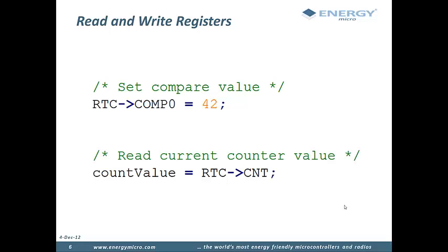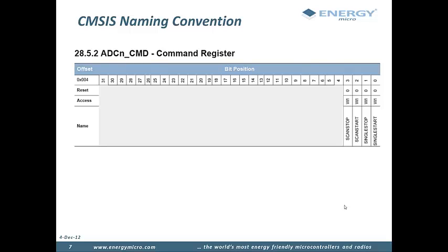Here is an example on how to use CMSIS. The first line sets the compare zero register of the RTC. The second line reads out the current value of the RTC counter. Most of the time we are not interested in the full value of the register; rather we want to modify individual bits. The names and descriptions of registers and bit fields are found in the reference manual for each device family.